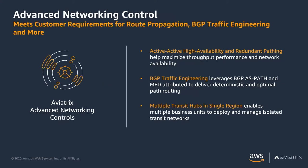Talking about advanced networking control — from a networking perspective, we have active-active high availability and redundant pathing, so our gateways are connected together in a way that maximizes performance and availability in your transit network. We also deliver BGP traffic engineering capabilities so you can bring the intelligence of BGP from on-prem into the cloud, leveraging capabilities like AS path prepending to take the optimal path. And we can deliver multiple transit hubs in a single region — if you have different business units that want their own transit environment, we can put together multiple transit environments in a single region and then have those go across regions and across clouds.